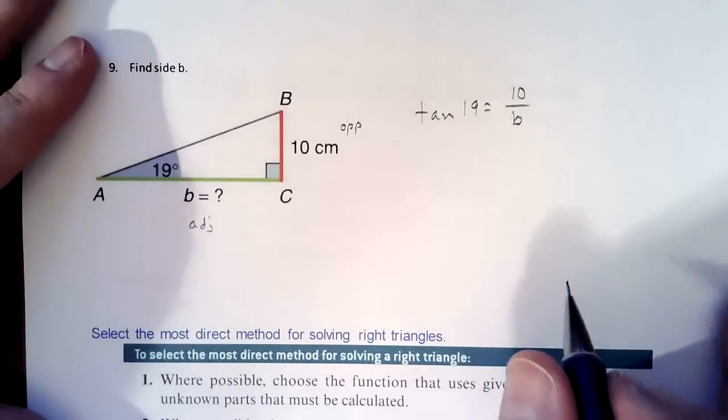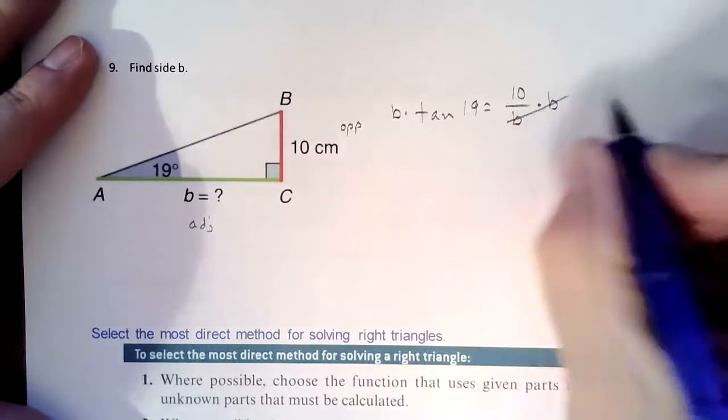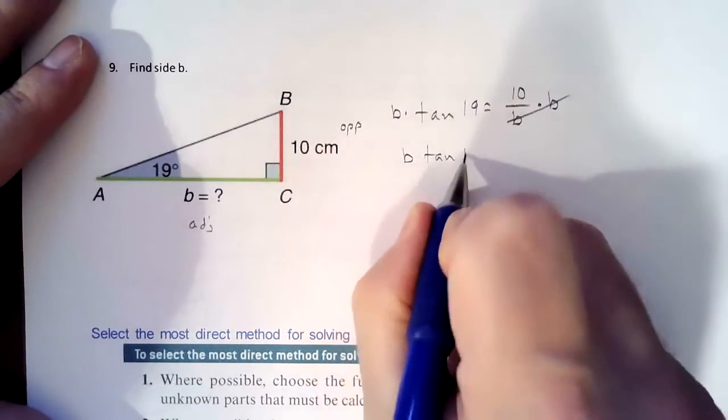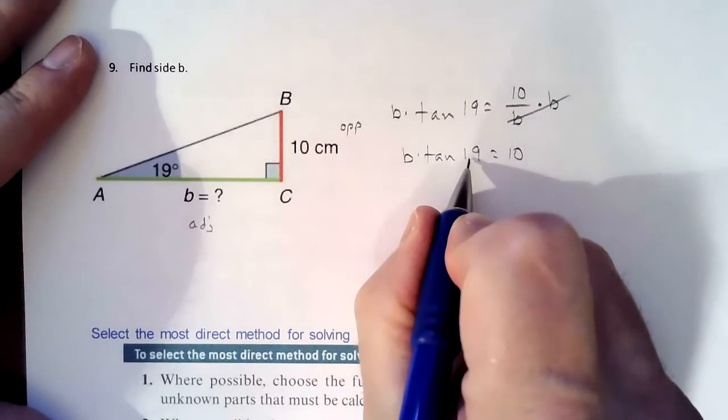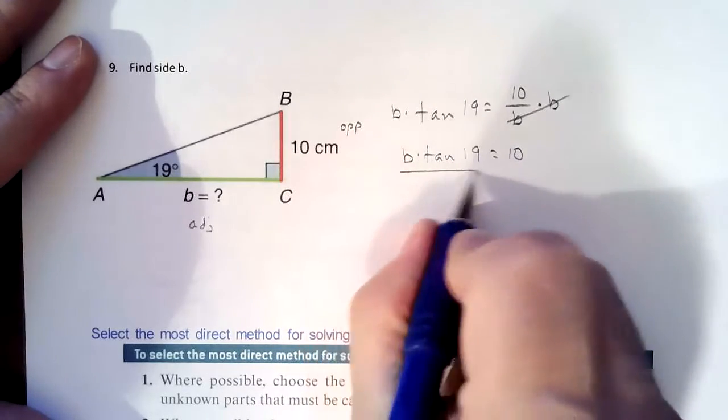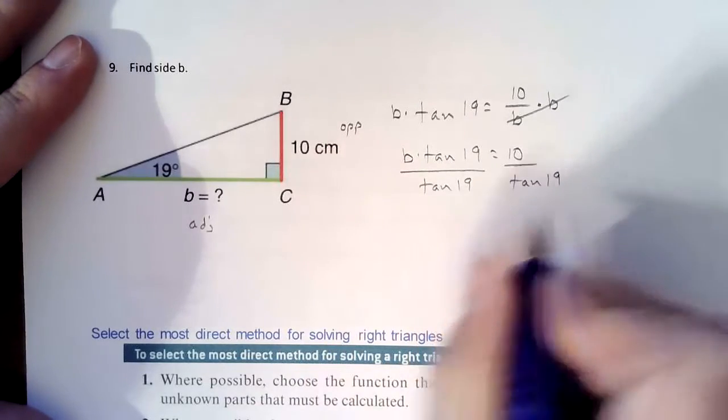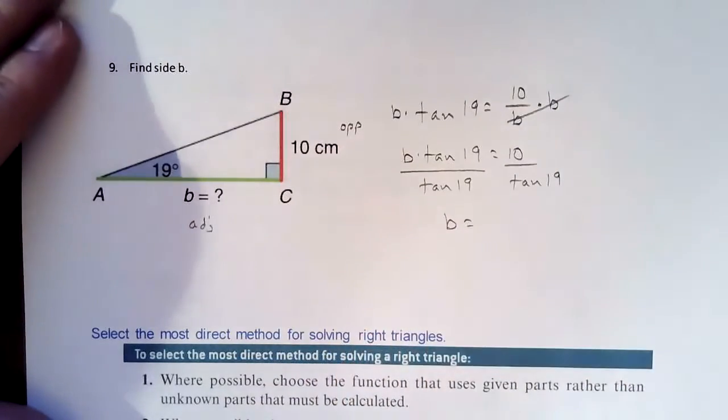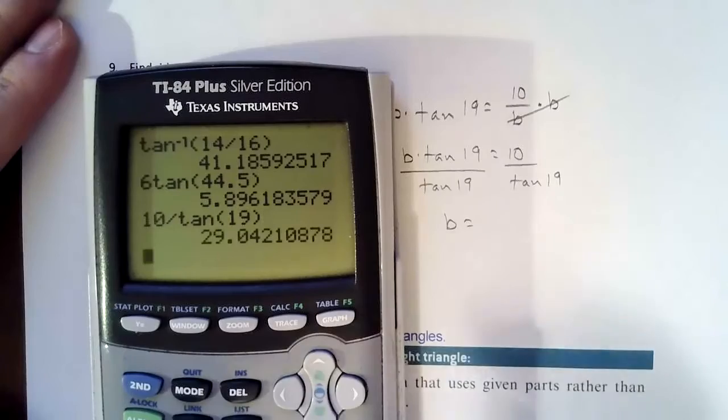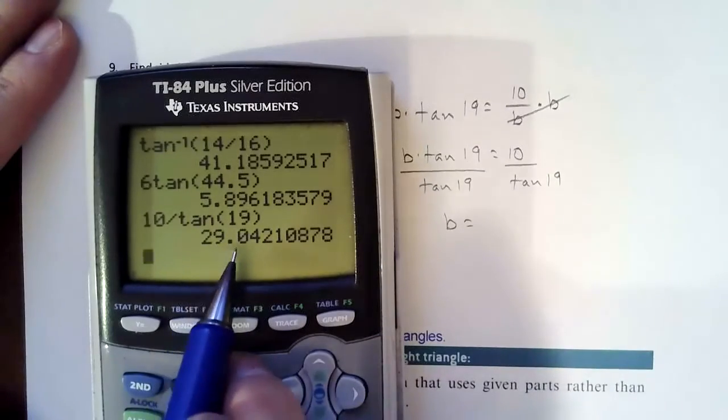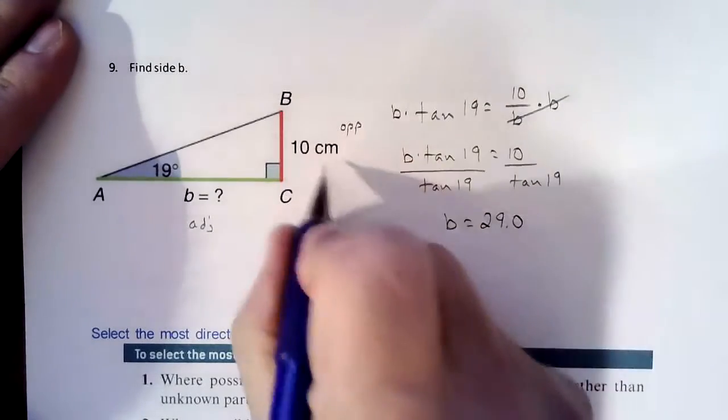And then we're going to solve it pretty much exactly the same as the last one. We're trying to clear out our fraction. So we'll multiply both sides by B to clear out the fraction. Now, this one, we have an extra step because we have to get B by itself still. So tangent of 19 is just some value that's multiplied to B. So to get rid of that, we're going to divide by tangent of 19. So we'll take 10 divided by tangent of 19, and that's going to get us 29.0. So B would be 29.0 centimeters.